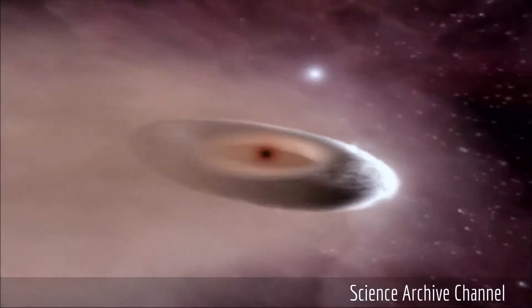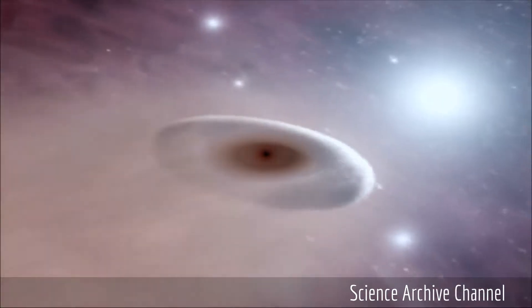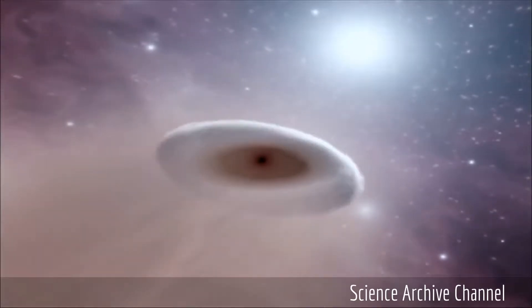When a black hole dines on a star, it does so first by tearing it apart. You might think of Silly Putty being stretched out and then just streams on in, sort of like water going down a drain. It's completely pulverized.